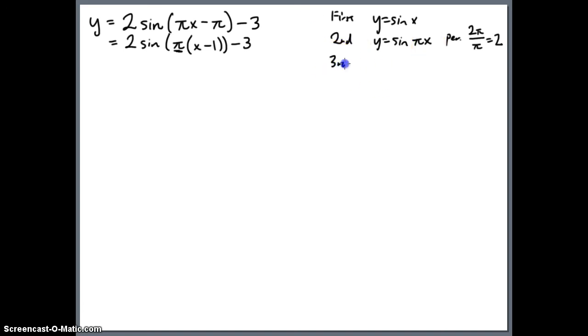The third thing we'll do, and we'll come back to the period being 2, it will help us to graph this. But the third thing we're going to do is we'll look at y equals sine of pi times the quantity x minus 1. And then the whole point is, what's this minus 1 going to do here? This is going to be a shift to the right by 1.